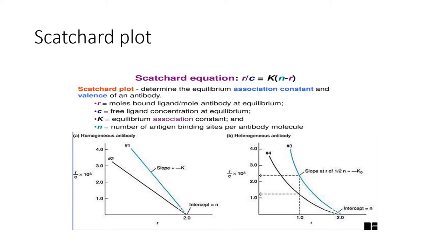The total concentration of antibody in the equilibrium dialysis chamber is known, since a known concentration is added. The equilibrium equation can be rearranged as the Scatchard equation: R/C = K(N − R). This Scatchard plot determines the equilibrium association constant and the valency of an antibody — valency meaning how many sites can bind with antigen. Here, R is the moles of bound ligand per mole of antibody at equilibrium; C is the free concentration of ligand at equilibrium; K is the equilibrium association constant; and N is the number of antigen binding sites per antibody molecule.